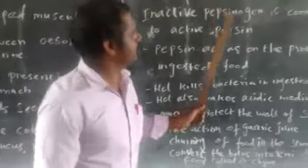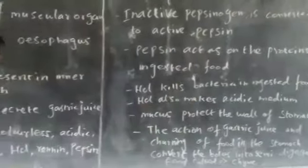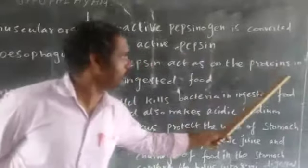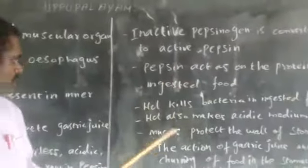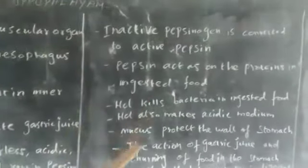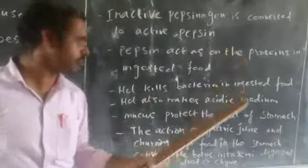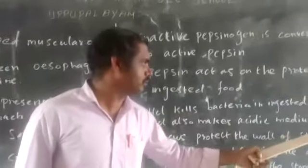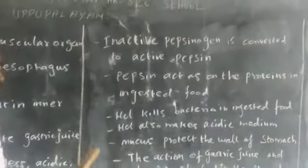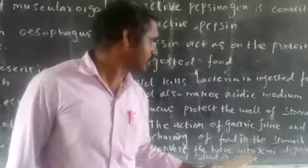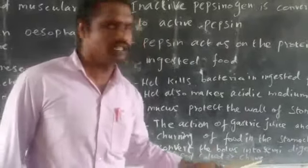The inactive pepsinogen is converted into reactive pepsin by hydrochloric acid. Pepsin acts on the protein in our ingested foods. Hydrochloric acid also kills the bacteria in our ingested foods and makes an acidic medium in our stomach. Mucus protects the wall of the stomach from the action of hydrochloric acid. The action of gastric juice and churning of food converts the bolus into chyme.